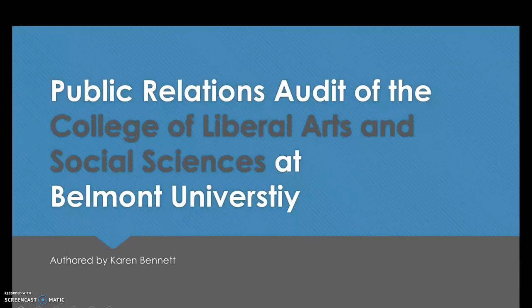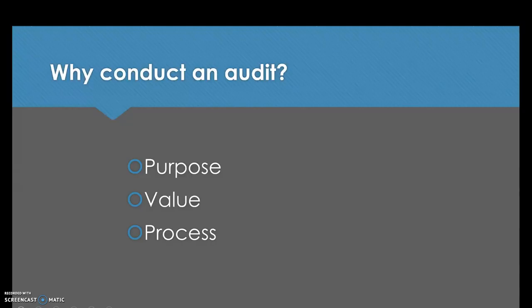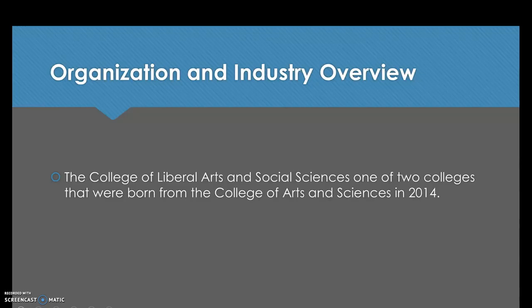This is the Public Relations Audit of the College of Liberal Arts and Social Sciences at Belmont University by Karen Bennett. The purpose of conducting this audit is to identify areas of strength and weakness within the college. The value is providing a comprehensive and strategic plan to help the college move forward and achieve its goals. The process uses the traditional application of the four PR principles: research, planning, communication, and evaluation.